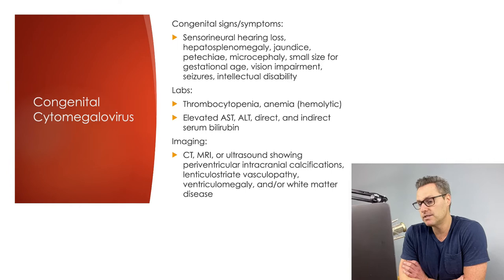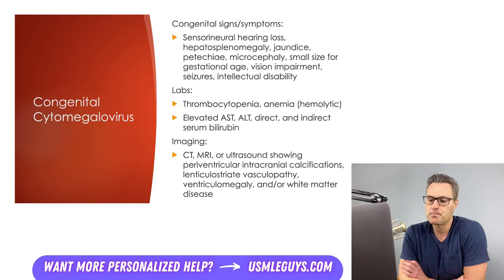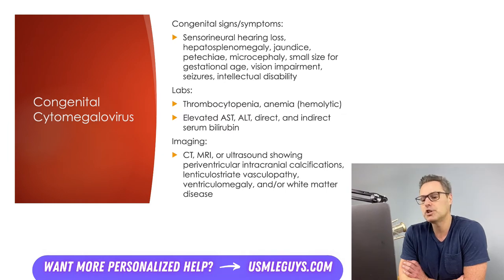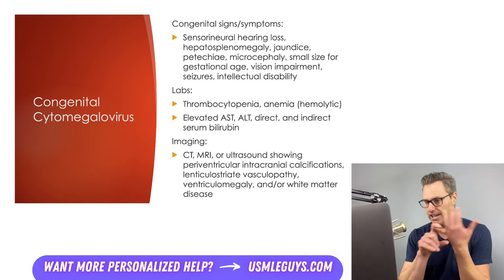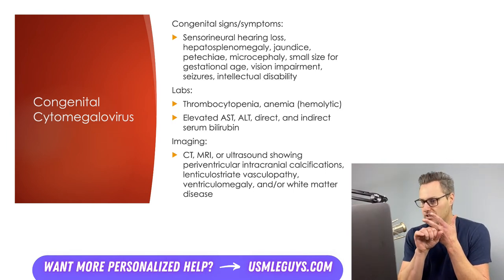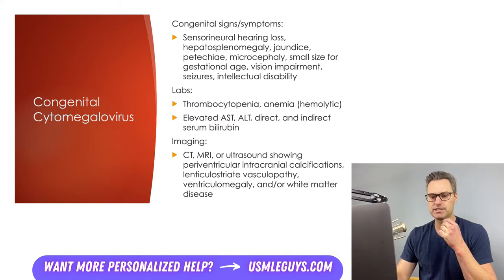Lab findings in congenital CMV include elevated direct and indirect serum bilirubin causing jaundice, thrombocytopenia which can present with petechiae, hepatosplenomegaly which can present with elevated transaminases, and hemolytic anemia. On imaging, a large variety of defects can be present in the brain, including intracranial calcifications, lenticulostriate vasculopathy, ventriculomegaly, and/or white matter disease.